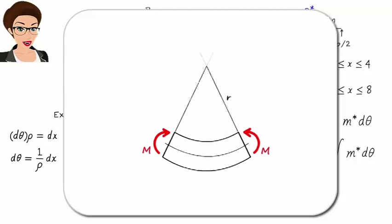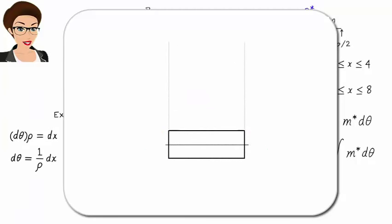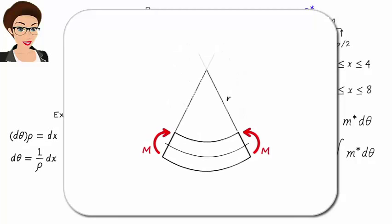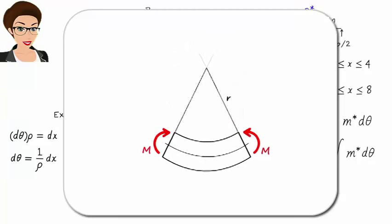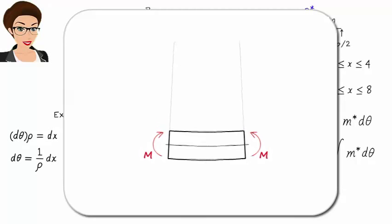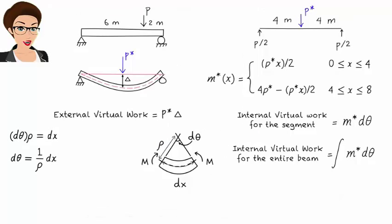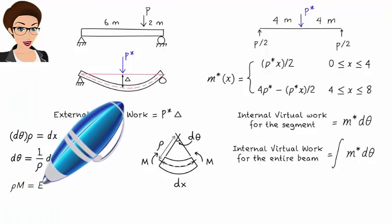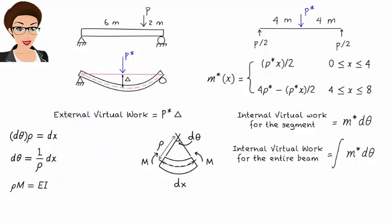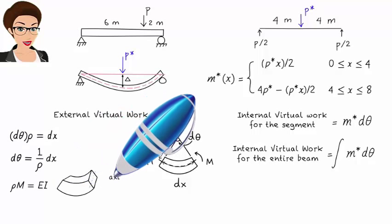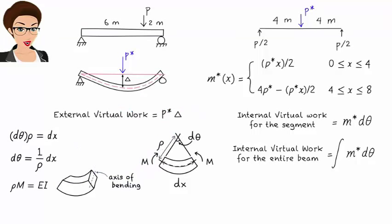When M increases, rho decreases. When M decreases, rho increases. Interestingly, the product of rho and M is constant. More specifically, rho times M equals E times I, where E is the material's modulus of elasticity and I is the moment of inertia about the axis of bending. Of course, here we are assuming linear elastic material. Then, we can write d theta equals M over EI times dx.